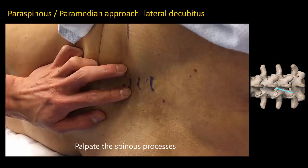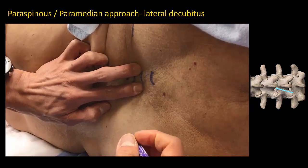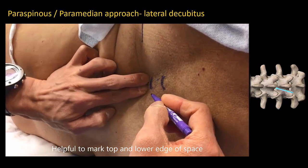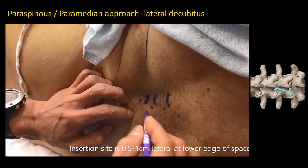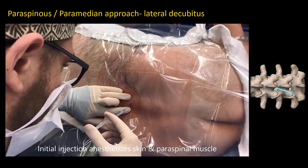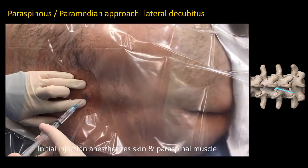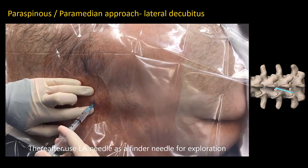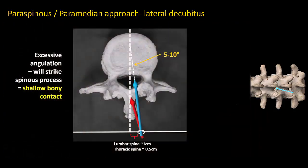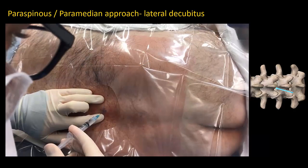This video illustrates the paraspinous approach in the lateral position. Palpate the upper and lower spinous processes bordering the chosen intervertebral space. The insertion site is lateral to the edge of the superior border of the lower spinous process. Anesthetize the skin and paraspinal muscles, then use the local anesthetic infiltration needle to gather further information about the bony anatomy using tactile feedback. In particular, direct the needle medially to deliberately seek contact with the spinous process, which establishes the maximum limit of medial angulation.